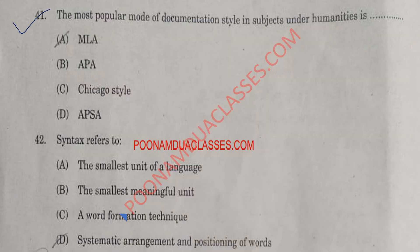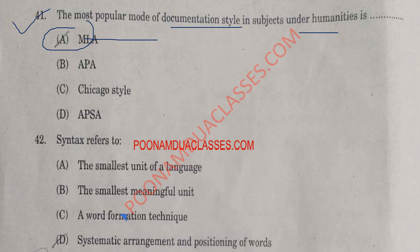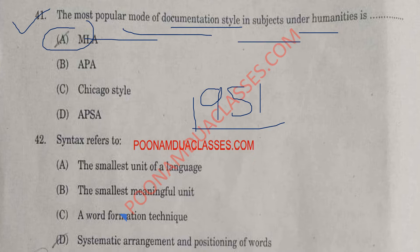Question number 41: The most popular mode of documentation styles in subjects under humanities is? The correct answer is option A — MLA. MLA citation style is most frequently used in the humanities, literature, languages, art, etc. The MLA handbook was first published by the Modern Language Association in 1951. Please note the year 1951 — it is important for UGC NET aspirants as well. MLA style relies on parenthetical citations with author and page number for material that is quoted, summarized, or paraphrased in the text of a paper.